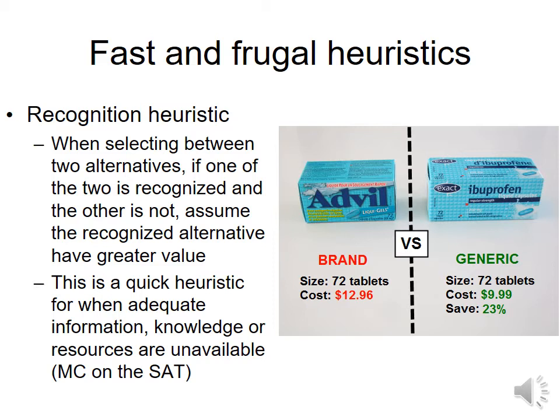The recognition heuristic: sometimes the easiest decision is going with what you recognize. This happens when you go shopping and choose a name brand over an off-brand — they may use the exact same ingredients, but you go with the one you've seen advertised. We also tell students this on the SAT: if you're not 100% certain, go with what you recognize. We often make decisions by choosing the option most familiar to us.